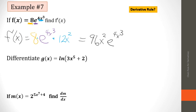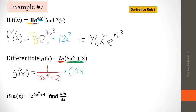The second refresher problem: G of X equals the natural log of (3x⁵ + 2). The derivative of natural log is 1 over the argument. The argument here is 3x⁵ + 2, so we get 1 over (3x⁵ + 2), then multiply by the derivative of the argument. The derivative of 3x⁵ is 15x⁴, giving the final answer 15x⁴ over (3x⁵ + 2). We can't cancel x⁴ with x⁵ because of the plus 2.